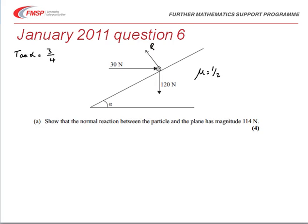For the first part of the question I've added into the diagram the normal reaction that we've been asked to find, and also put on there information about mu equal to a half and tan alpha is three quarters. I would advise you to do this as well. The fact that tan alpha is three quarters allows us to work out easily sine and cosine of alpha.